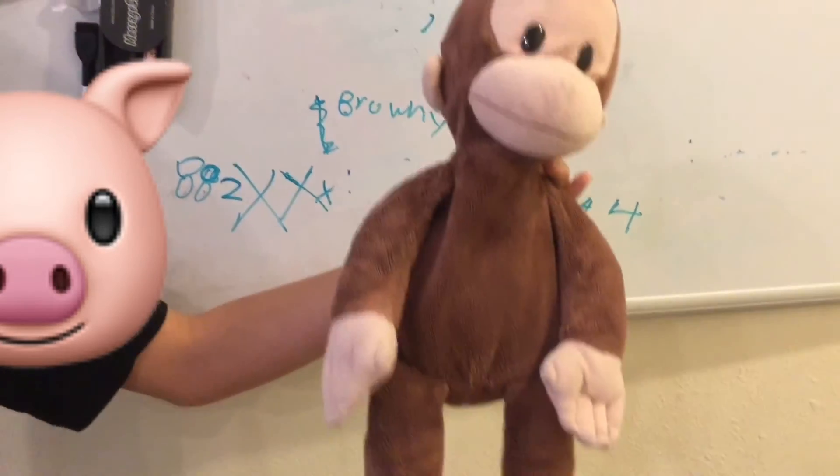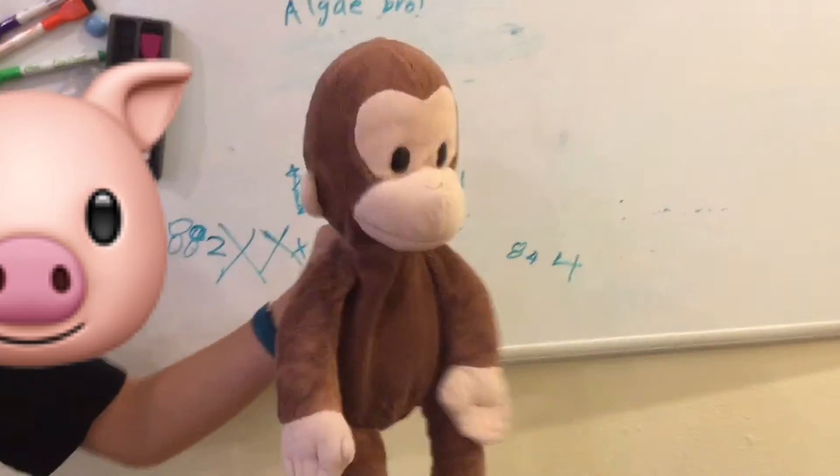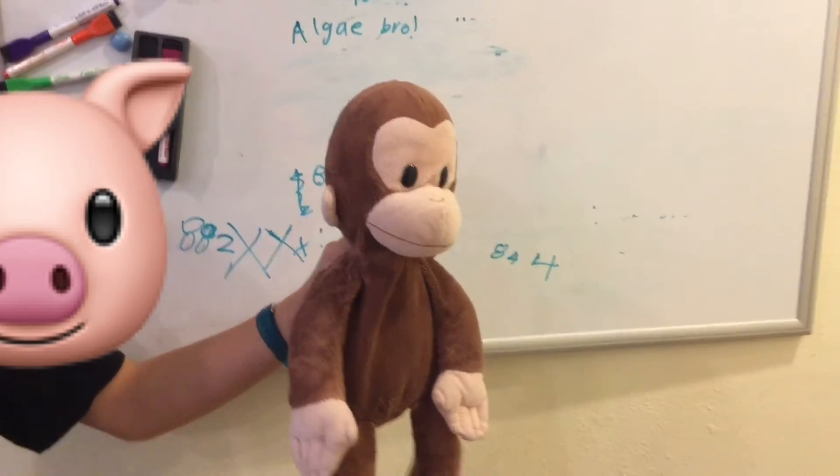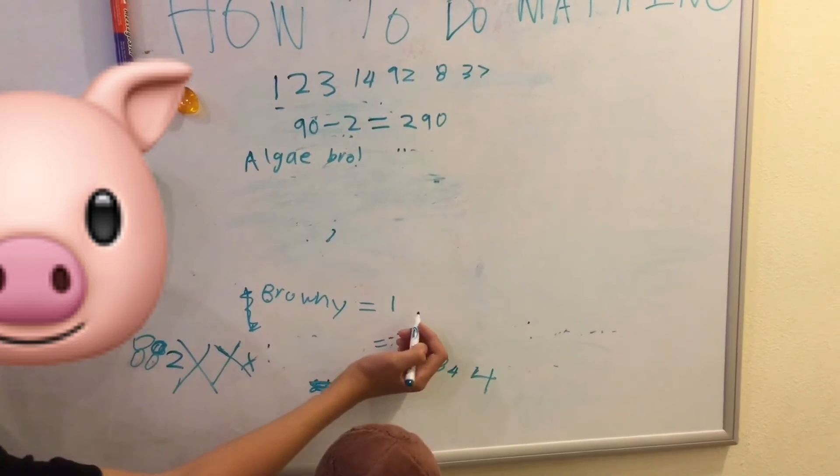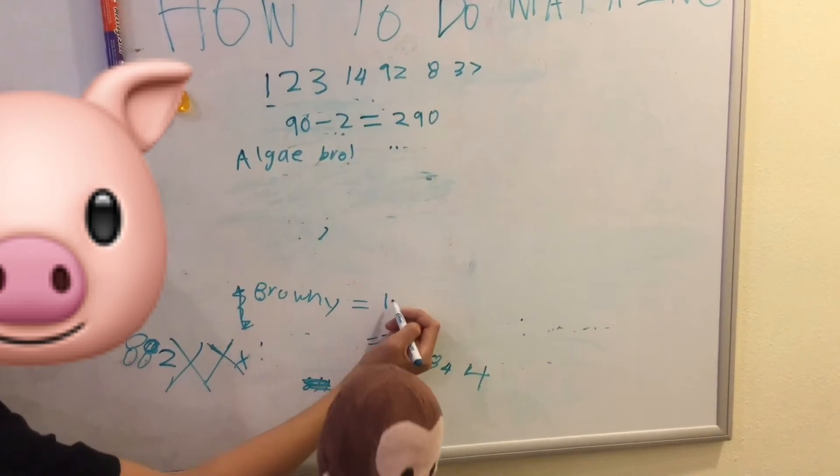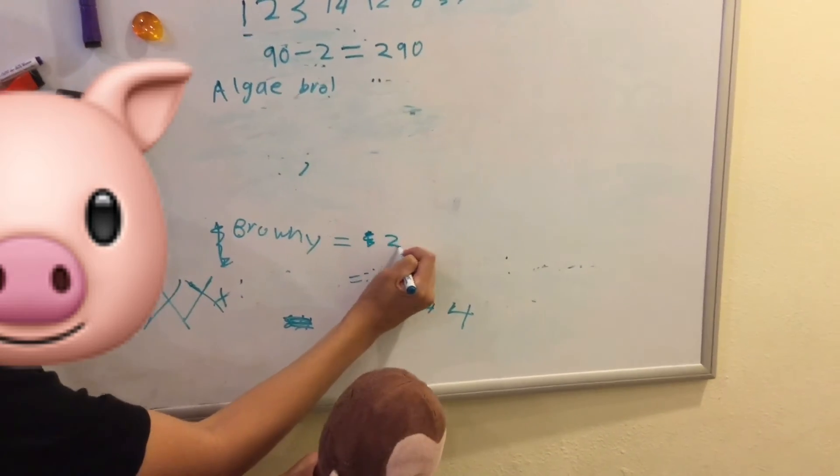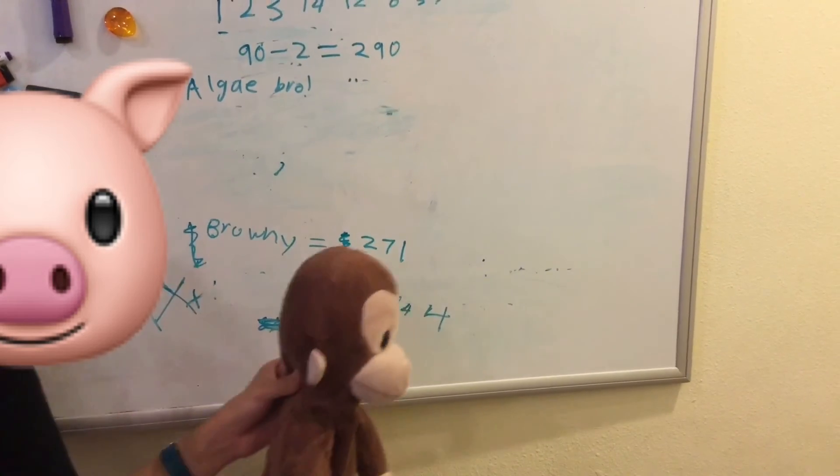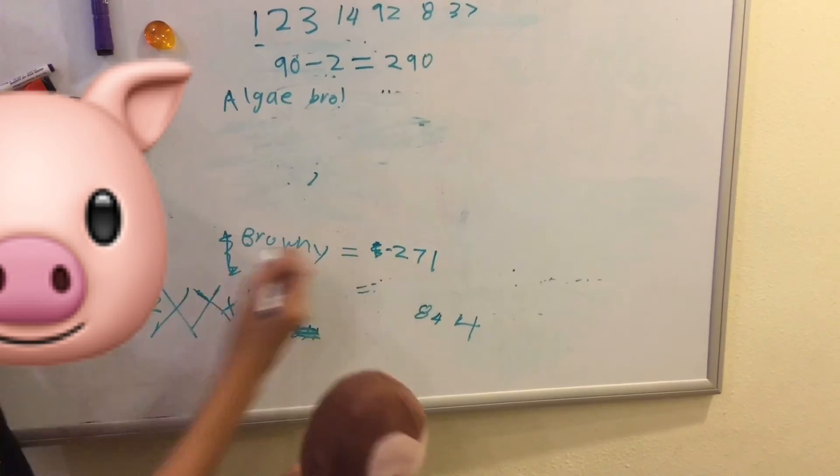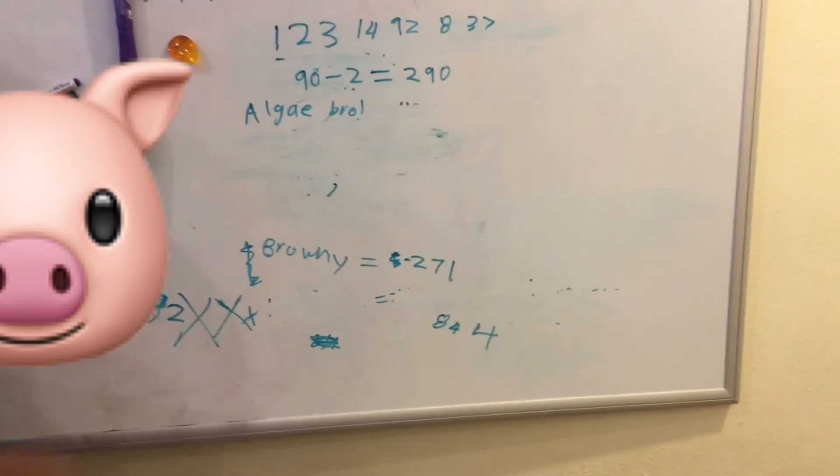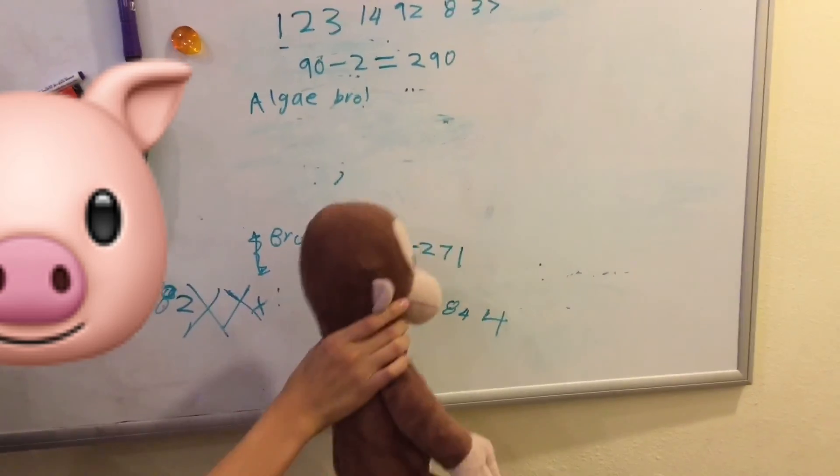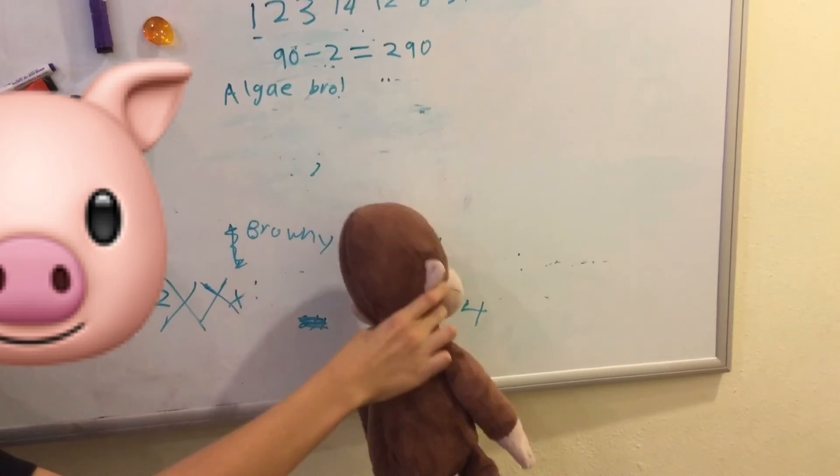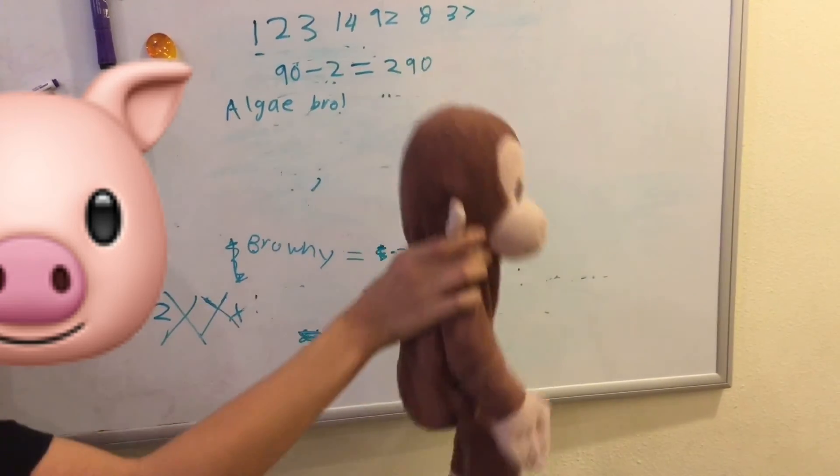But you say, brownie's not 1. Yeah, that's because in all algebra problems, you do some weird thing. You subtract 27. So, if you subtract 27, it's 271. And then you have to add a negative sign. So, there it is. We figured out brownie equals x. And brownie's age is negative 271.